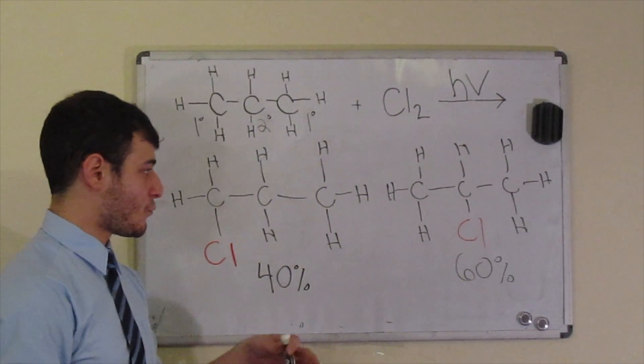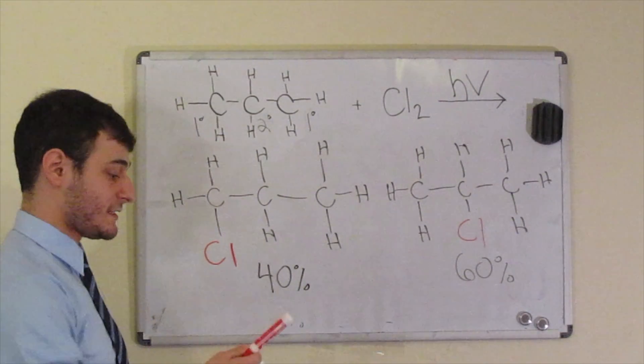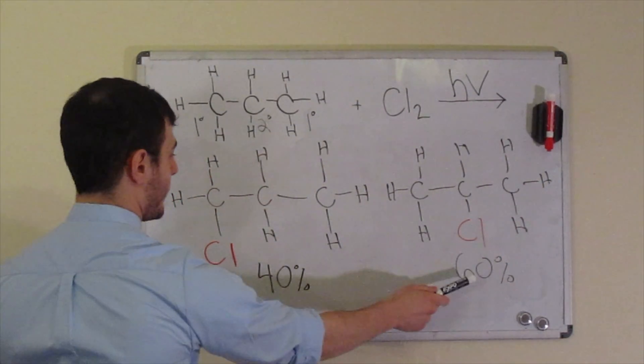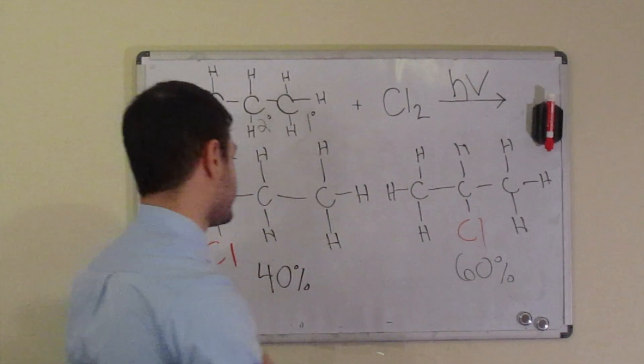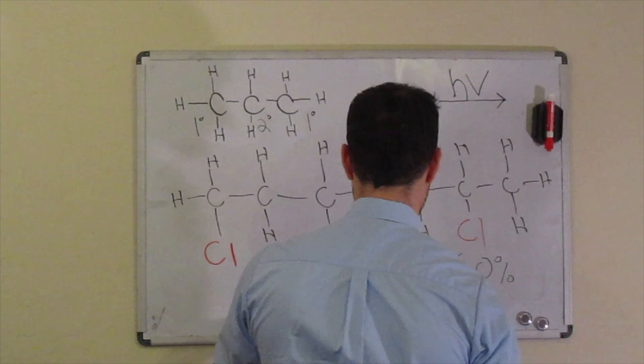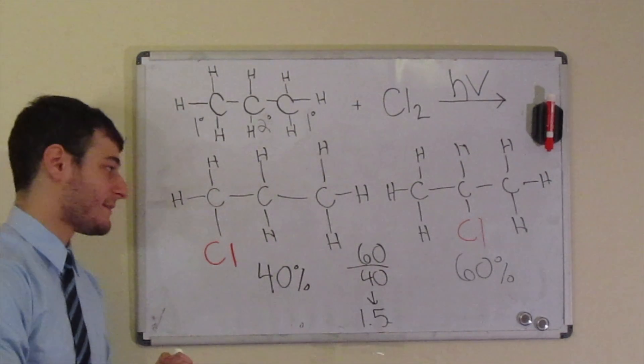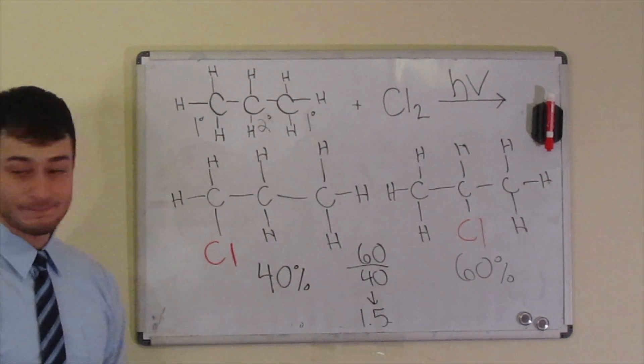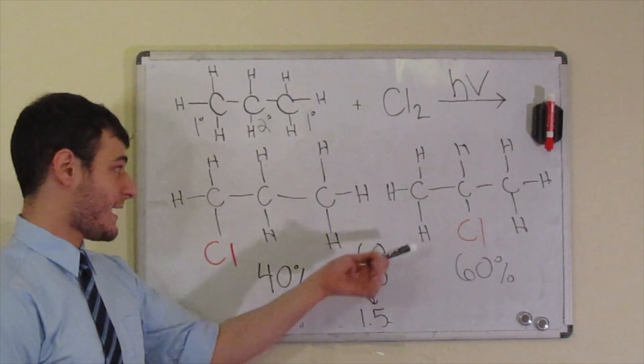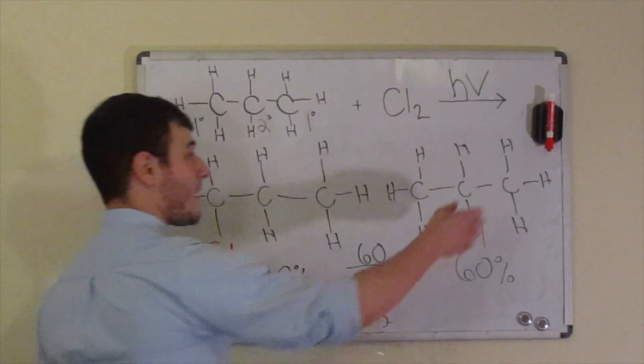So what someone might ask you is, what are the relative reactivities of each of these hydrogens? And if you've never done a problem like this before, you might say, oh well, I just want to compare 60 to 40. So I'll just say 60 divided by 40. And that's going to give me 1.5. So these are 1.5 times more reactive than these hydrogens. And if you did that, you would be wrong. That's because you don't take into account the different amounts of each hydrogen that you have. So I'm going to show you how you do a problem like this.